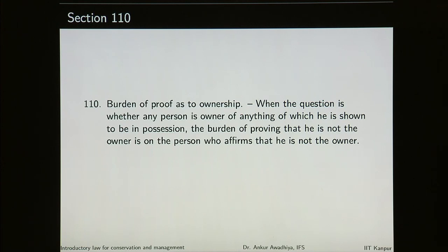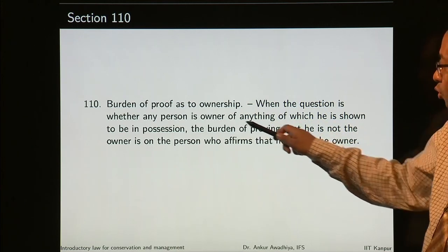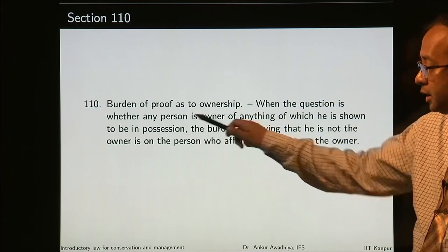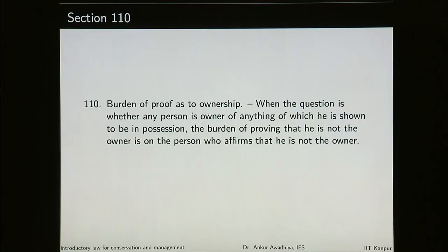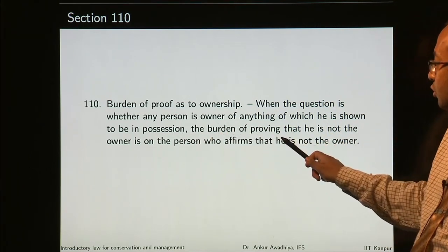Burden of proof as to ownership. When the question is whether any person is owner of anything of which he is shown to be in possession, the burden of proving that he is not the owner is on the person who affirms that he is not the owner. If the court did not intervene, the person would continue to remain in possession of that house — that is the status quo. So the person who wants to change the status quo and make the court believe that this person is not the owner will have to prove it.